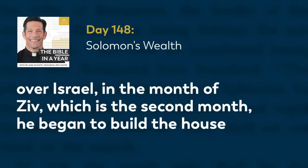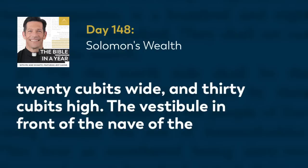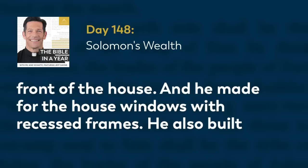In the 480th year after the sons of Israel came out of the land of Egypt, in the fourth year of Solomon's reign over Israel, in the month of Ziv, which is the second month, he began to build the house of the Lord. The house which King Solomon built for the Lord was 60 cubits long, 20 cubits wide, and 30 cubits high. The vestibule in front of the nave of the house was 20 cubits long, equal to the width of the house, and 10 cubits deep in front of the house.